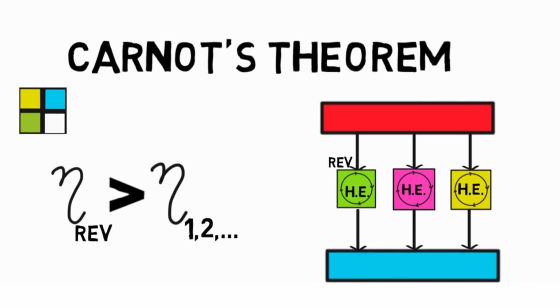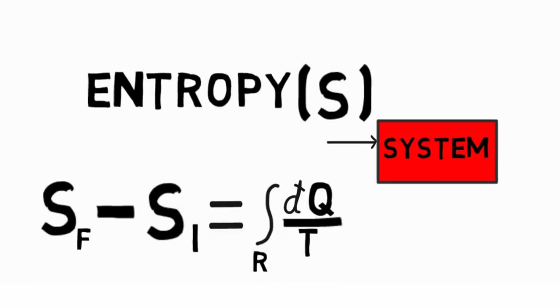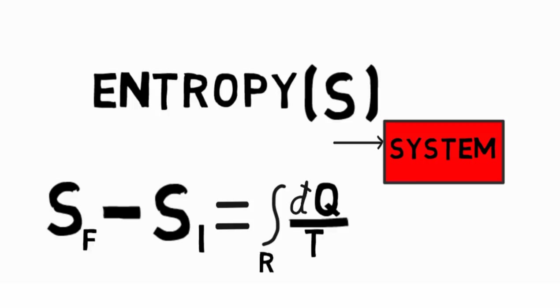Hence, we learnt about what the Carnot and Clausius' theorem is. Then, we went on to find out what entropy is and why it is a property of the system.